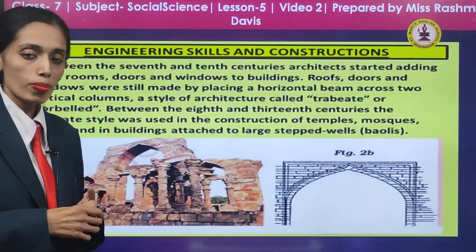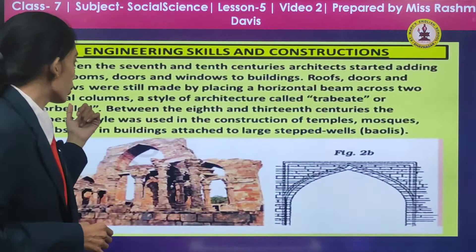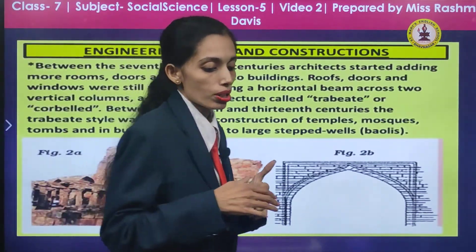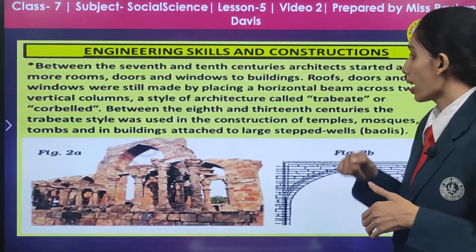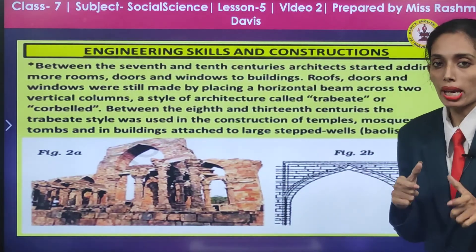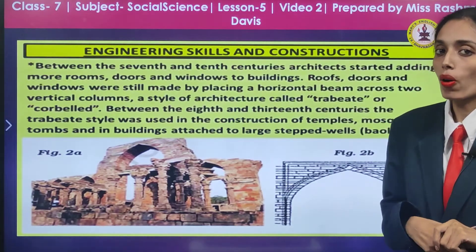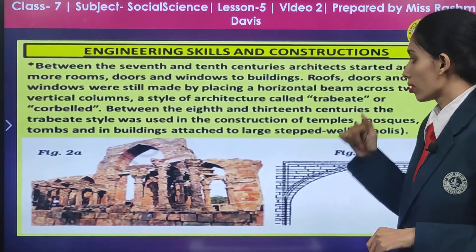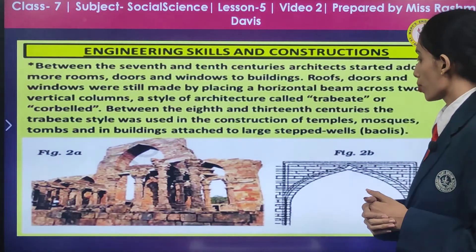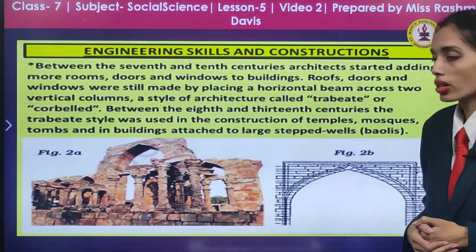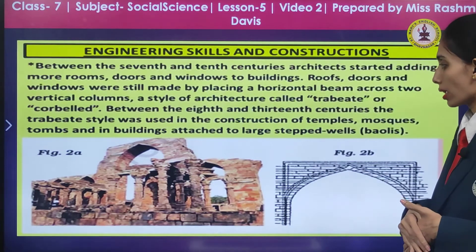It carried different rooms, doors and windows. Roofs, doors and windows were still made by placing a horizontal beam across the vertical column — a style of architecture called trebate or corbilt. Between the 8th and 13th century, this trebate style was used in the construction of temples, mosques, tombs and buildings attached to large step wells, that is Baulis.